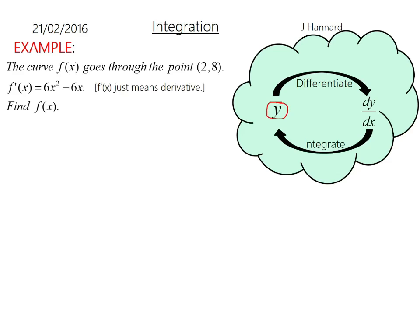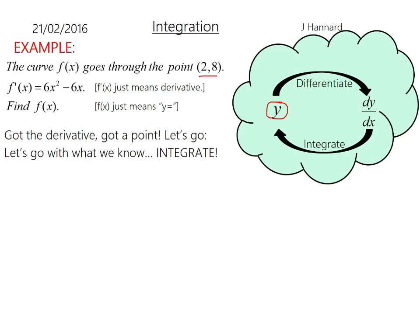f'(x) just means the derivative. f(x) just means y equals or something equals function of x. So we've got the derivative. We've got a point right here, (2, 8). Let's go with what we know. Integrate first. So add 1 to the power, divide by the new power. And we will get 6x to the 3 over 3 minus 6x to the 2 over 2 plus c. And cancel that down. 6 over 3 is 2, and 6 over 2 is 3.